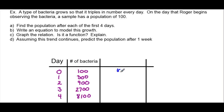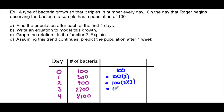Our initial day started with 100 bacteria. To get to 300 after one day, we took 100 and multiplied it by 3. To get to 900, starting from the beginning, we took 100, multiplied by 3, then multiplied by 3 again — the same as 100 times 3 times 3. Each day after, we just multiply the result by another 3. So on our last day, we start with 100, multiply by 3, by 3, by 3, and by 3 one last time.